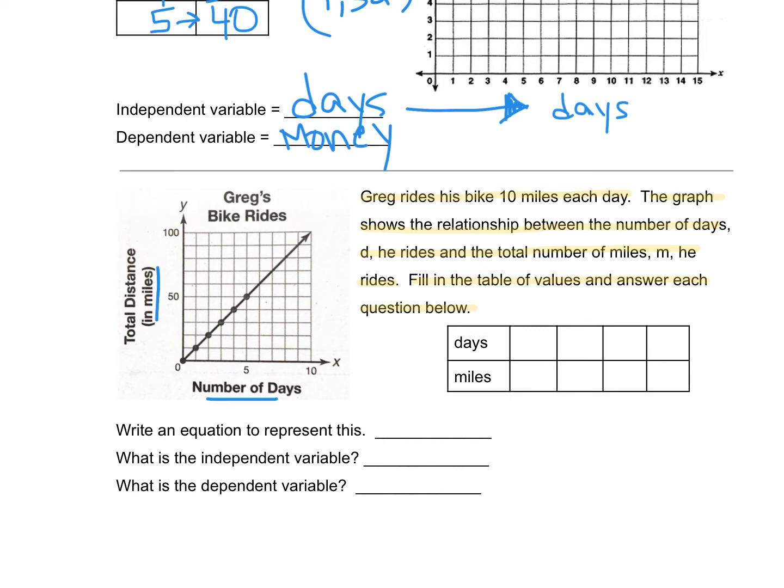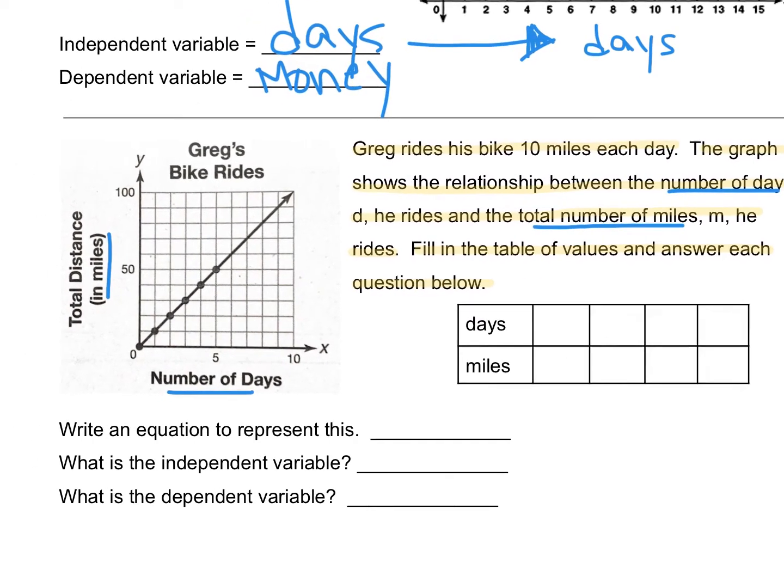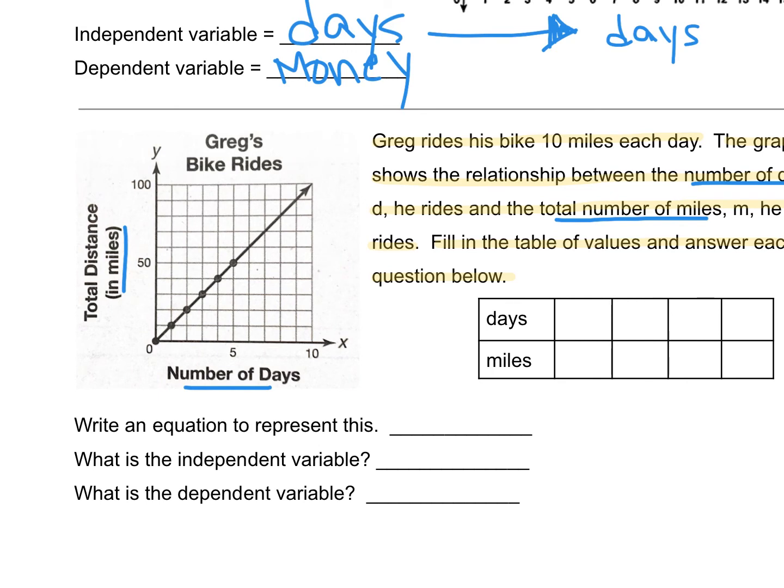Our graph is showing the relationship between the days that he rides and the total number of miles. We know he goes 10 miles each day. So this graph here is five days. That means each line is going to be one day, two days, three, four, five, and so on. But then on the y-axis, we're counting by tens. So this is going to be 10 miles, 20, 30, 40, and so on. So we know one day he goes 10 miles. That's this point right here. Two days, he's going to go 20 miles.